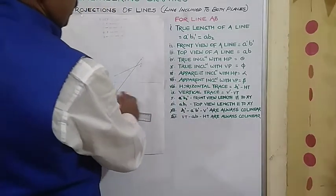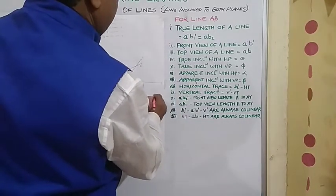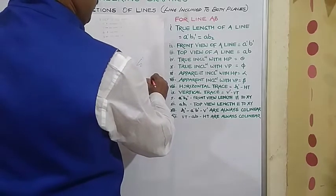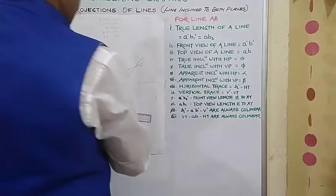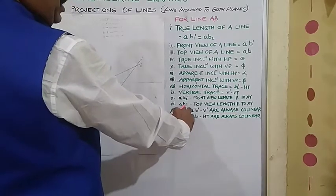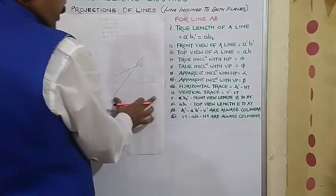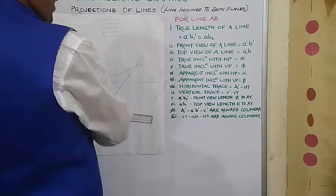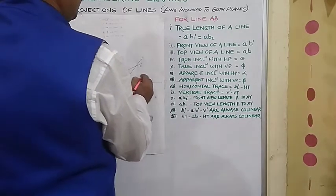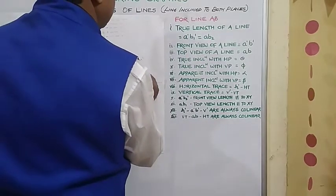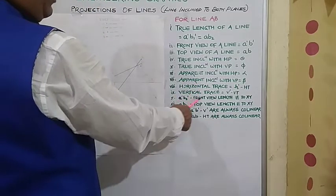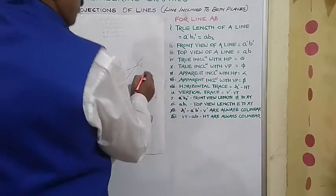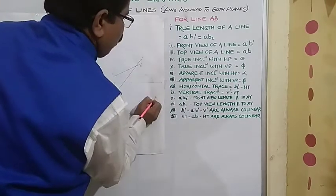Now from A dash draw one faint horizontal line. From A also faint horizontal line can be drawn. Now this horizontal faint line is intersecting at this point. From this particular B dash we have drawn arc. So this is B one. A B one. Here I have mentioned A B one, top view length parallel to X Y. So this is parallel to X Y. And this is A dash B two dash. Here also it is mentioned A dash, front view length parallel to X Y. So we have got B two dash. We have got B one.